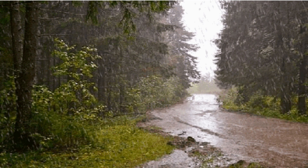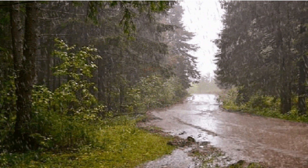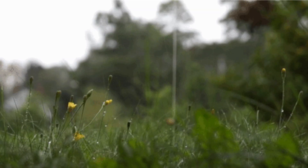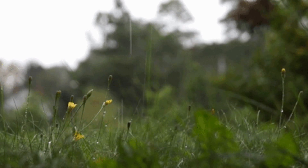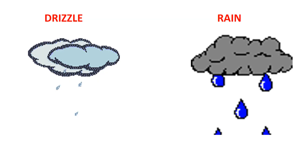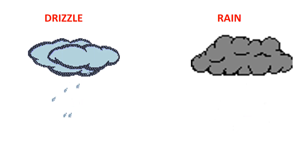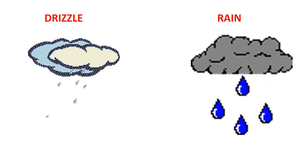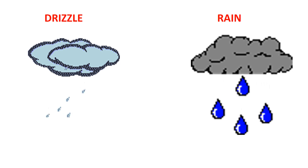Do you know the difference between rain and drizzle? Big, heavy water droplets falling to the ground are called rain. Small water droplets falling to the ground are called drizzle. Drizzle falls very slowly compared to rain. It takes about 700 drizzle drops to make one rain drop.